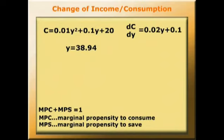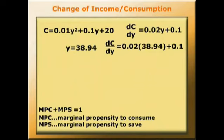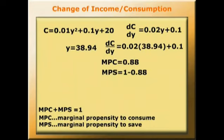Now, let's work out the new marginal propensity to consume. dc by dy equals 0.02 times 38.94 plus 0.1, which equals 0.88. So if 0.88 is the marginal propensity to consume, the marginal propensity to save is 1 minus 0.88, which equals 0.12, down from the 0.18 that it was two years earlier.